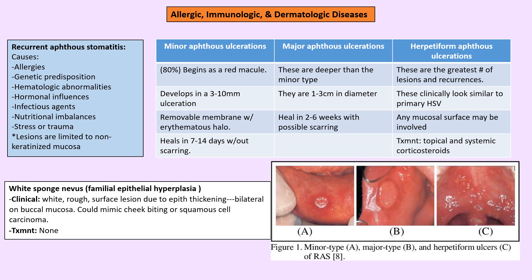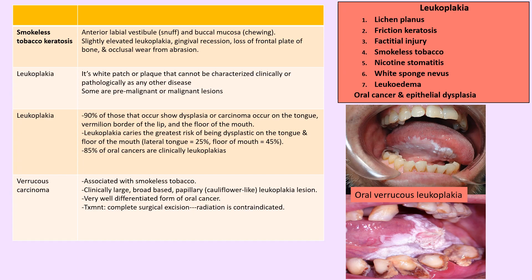Smokeless tobacco keratosis involves snuff dipping or chewing. Leukoplakia is a very important condition — it is defined as a white patch or plaque that cannot be characterized clinically or pathologically as any other disease. It can appear like a white patch.